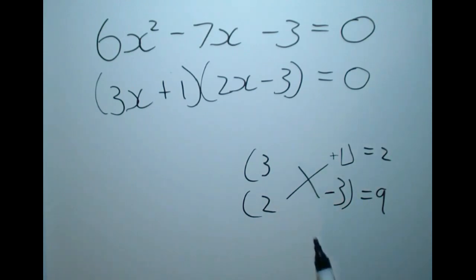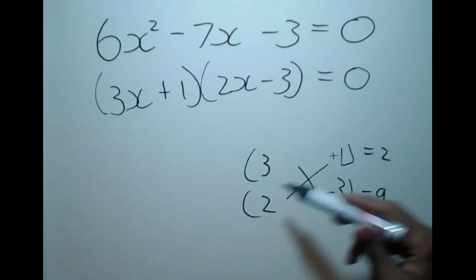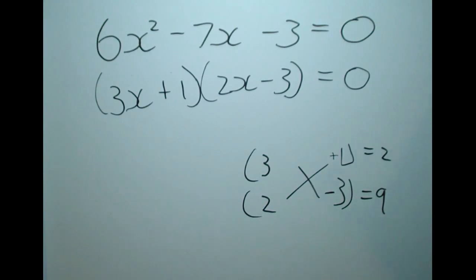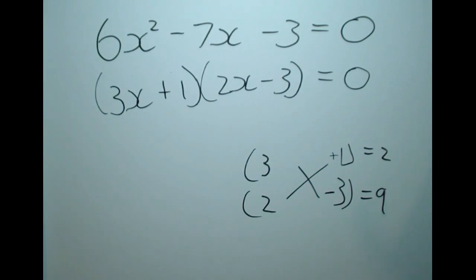That is the point of doing cross multiplication — once we find a correct factor combination, the brackets are already formed for us. We don't need to write out all possible combinations; we just need to go through them until we find one that works and discard the rest. I hope you all now understand how to use the cross multiplication method to factorize quadratics. If you are unfamiliar with the basics of quadratics, please check out the factorizing simple quadratics video. Happy studying!